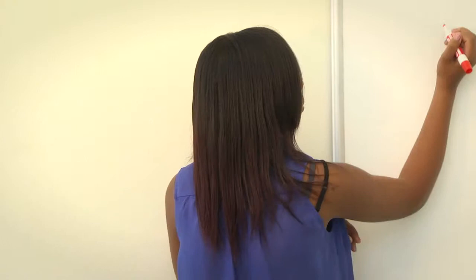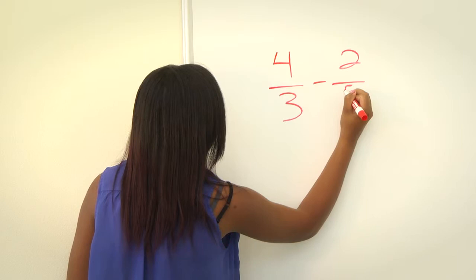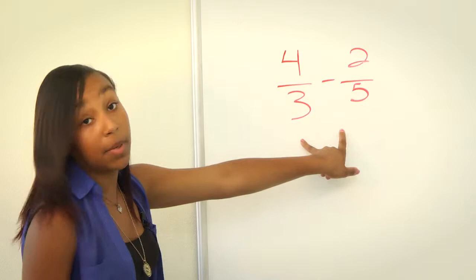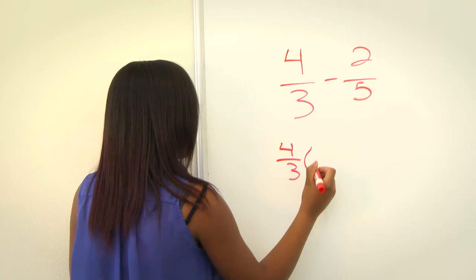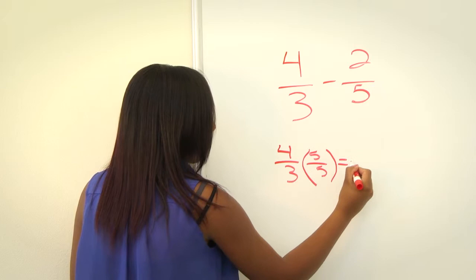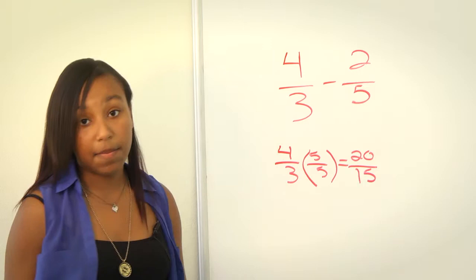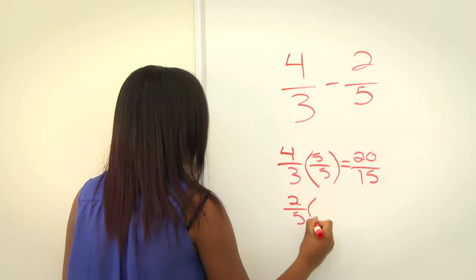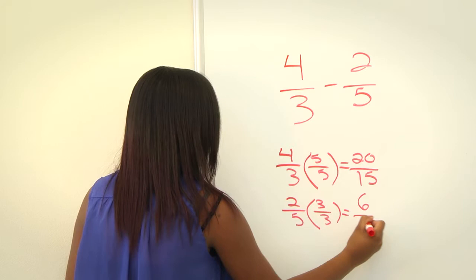So now let's try a more complicated example. We're going to try 4 thirds minus 2 fifths. The first thing we want to do is multiply by an equivalent of 1 so that the denominators are the same. So 4 over 3 times 5 over 5 will get us to 20 over 15. We have to do the same thing for 2 fifths. So 2 over 5 times 3 over 3 will equal 6 over 15.